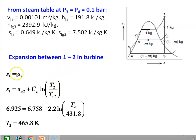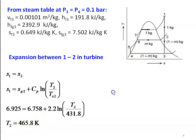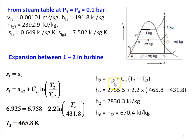For expansion between states 1 and 2 in the turbine, S1 equal to S2. Assuming state 2 is superheated steam, we use S1 equal to SG2 plus CP times ln(T2/TS2). Substituting: 6.925 equal to 6.758 plus 2.2 times ln(T2/431.8), giving T2 equal to 465.8 Kelvin. Therefore H2 equal to HG2 plus CP times (T2 minus TS2) equal to 2755.5 plus 2.2 times (465.8 minus 431.8) equal to 2830.3 kJ/kg.